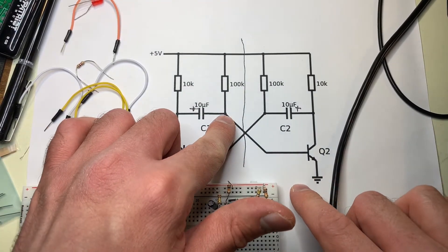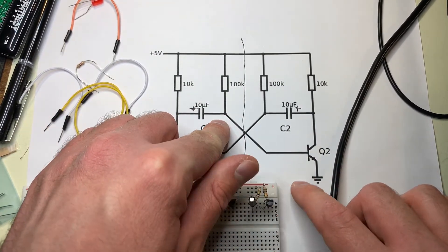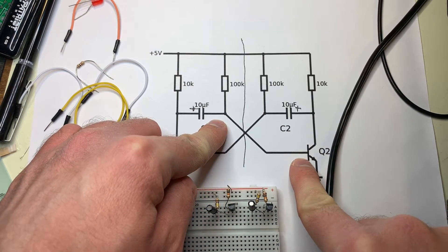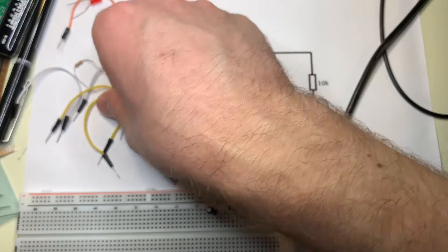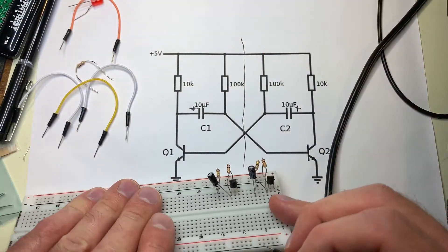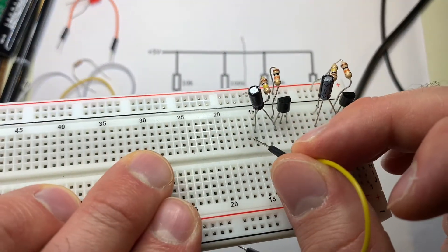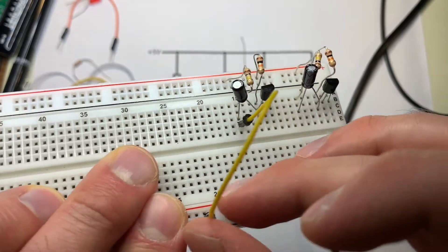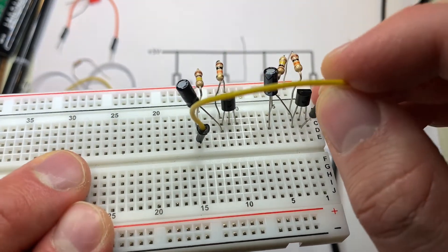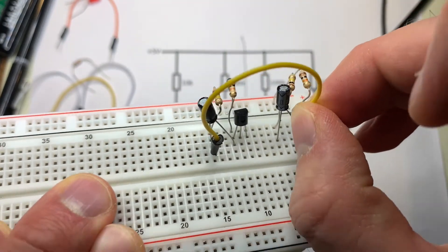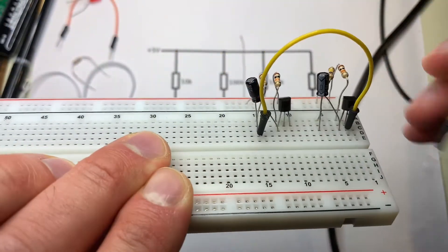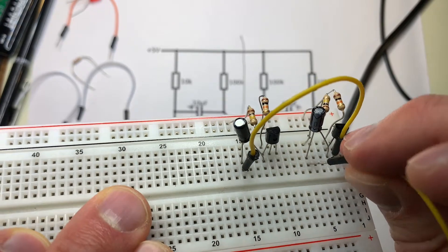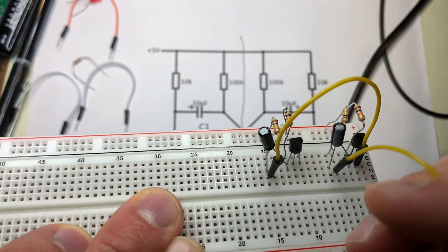So you can see the negative terminal of the capacitor on one side is connected to the gate of the transistor on the other side. Now the same is true in reverse. So what we can do is take one of our jumper wires and take the negative terminal from the capacitor and wire it up to the other side for the gate or the center pin of the transistor. And the same on the other side. Negative to the gate.